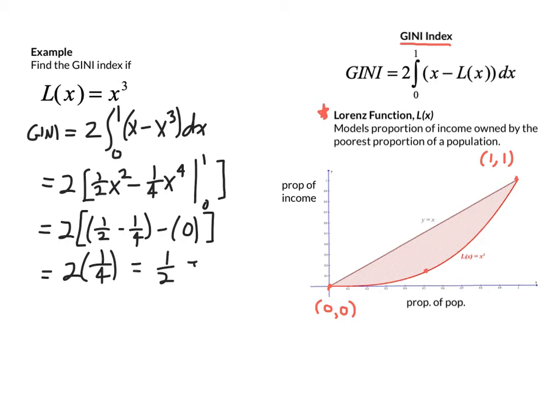And many times, they'll quantify that as either a decimal value, or you may even see it if you go online and read up on this a little bit as a percentage. So what we've done, then, in the calculus sense, is we've taken this region here, between x and the Lorenz curve, and we found that area, and then essentially doubled it to obtain what's called the Gini index.